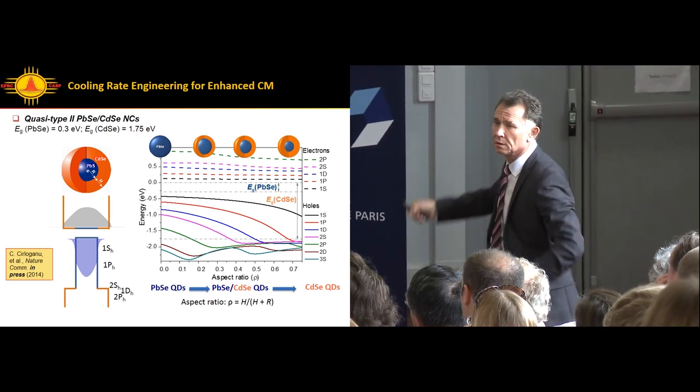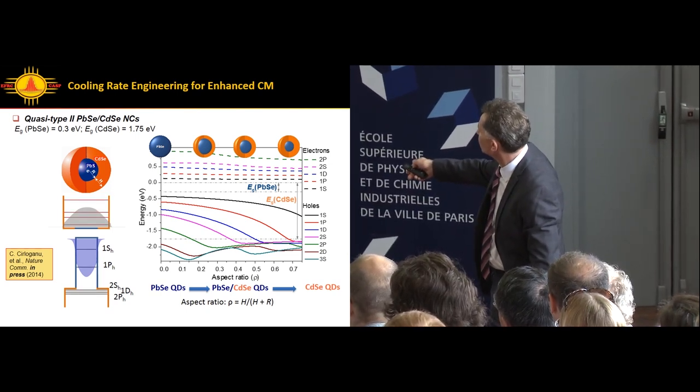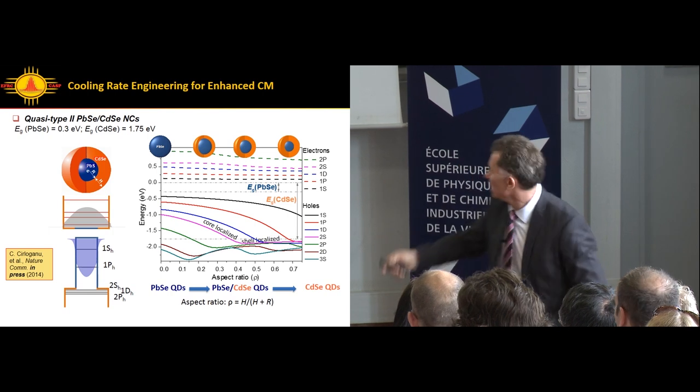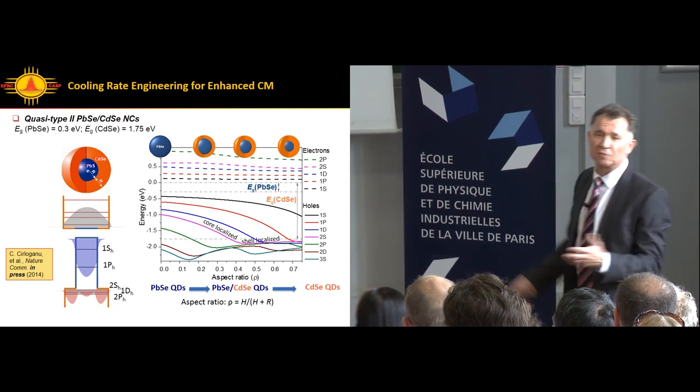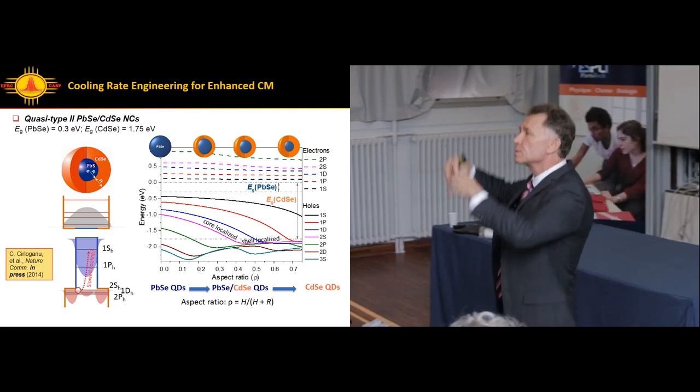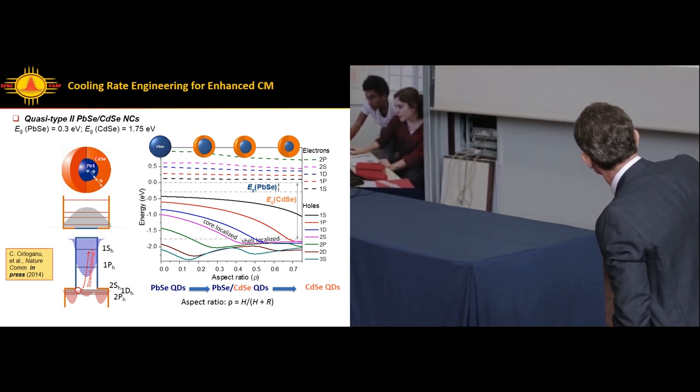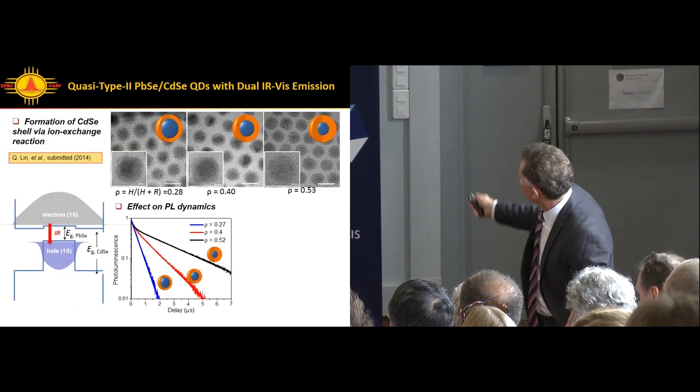But holes really feel the change in the size of the core. I'm going to look at this 2S state, which is the state we believe is very relevant to the process of carrier multiplication. First, the energy of this state increases as we build up the shell, progressively confining the hole to the core. But then suddenly the trend changes. What does it mean if you look at the calculation of the wave functions? Something happens which is probably obvious. Hole from becoming core localized jumps in the shell, becomes shell localized. That leads to the decoupling between these two states, which is expected to lead to very significant slowing down in intra-band relaxation.